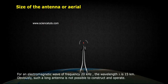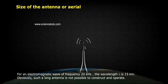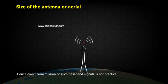For an electromagnetic wave of frequency 20 kHz, the wavelength λ is 15 km. Obviously such a long antenna is not possible to construct and operate. Hence, direct transmission of such baseband signals is not practical.